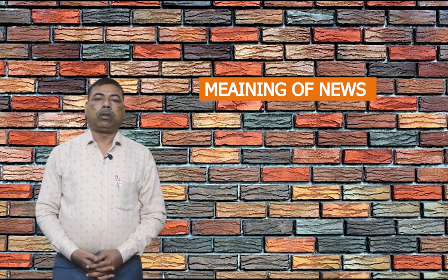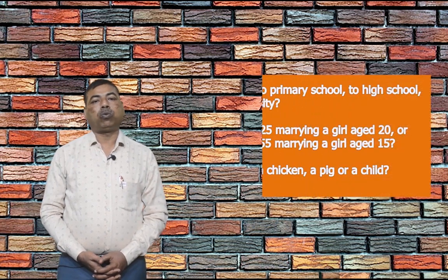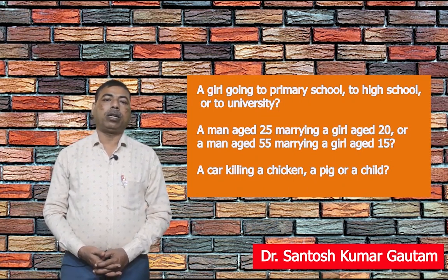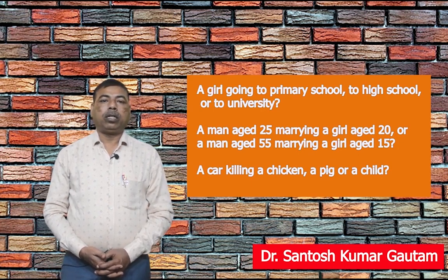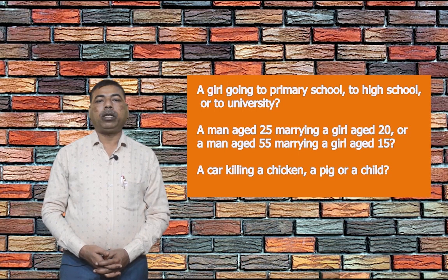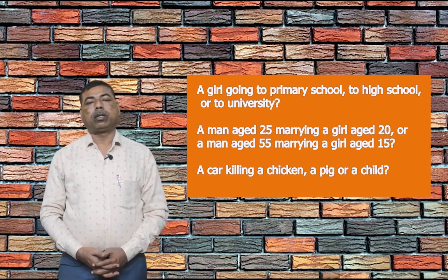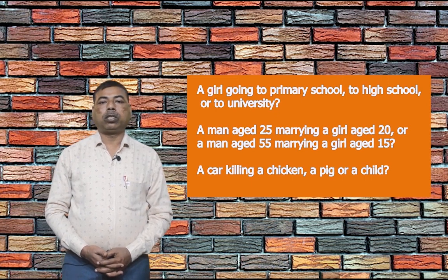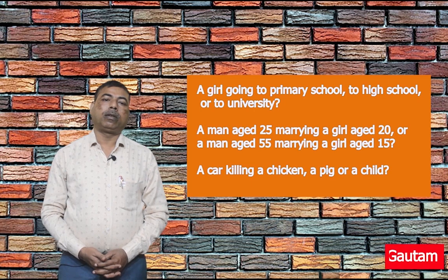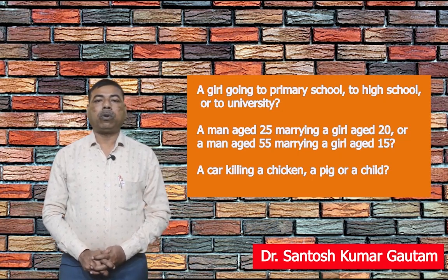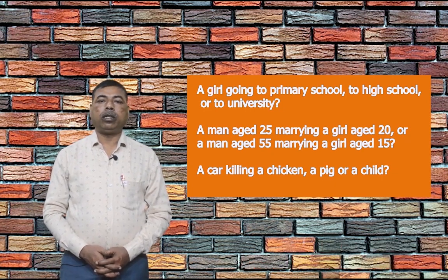Let us understand news by the following examples. Which do you think is more important: a girl going to primary school, high school, or university? A man aged 25 marrying a girl aged 20, or a man aged 55 marrying a girl aged 15? A car killing a chicken, a pig, or a child? The most newsworthy answers are: a girl going to university, a man aged 55 marrying a girl aged 15, and a car killing a child. If your answer was different, that does not necessarily mean you are wrong.